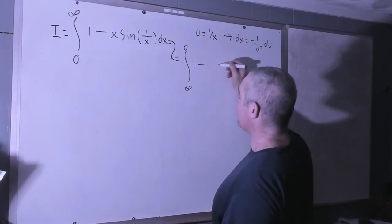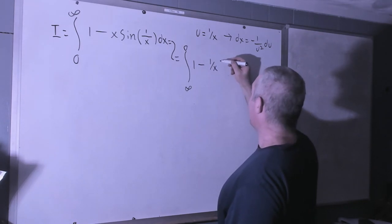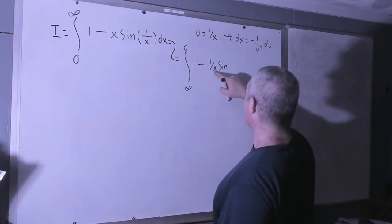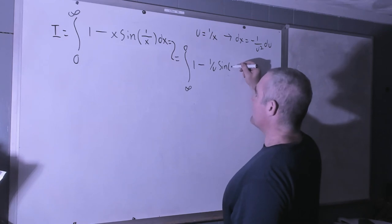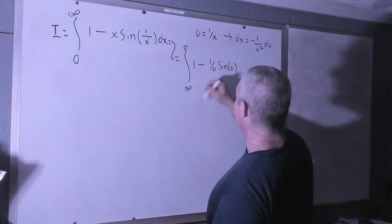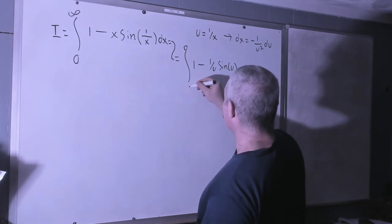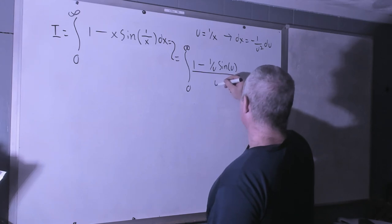I'm going to have 1 minus, we'll get 1 over x times the sine, sorry 1 over u, sine u, and our dx is negative which I will use the bounds of integration, u squared.